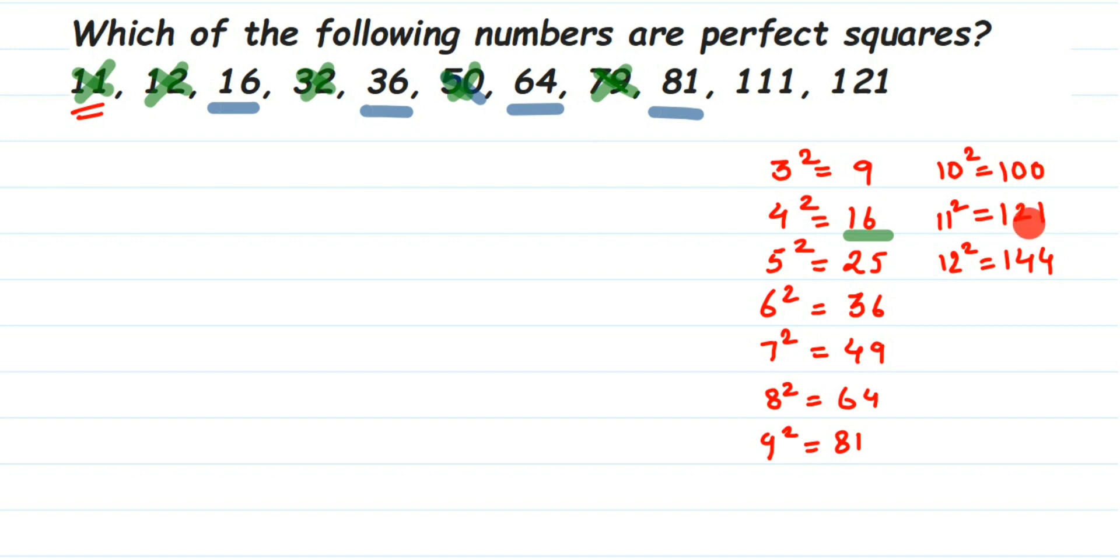Next we have 111. We don't have 111 because after 100 we have 121, so 111 is also not a perfect square. And last one we have here is 121. 121 is the square of 11, 11 square is 121.